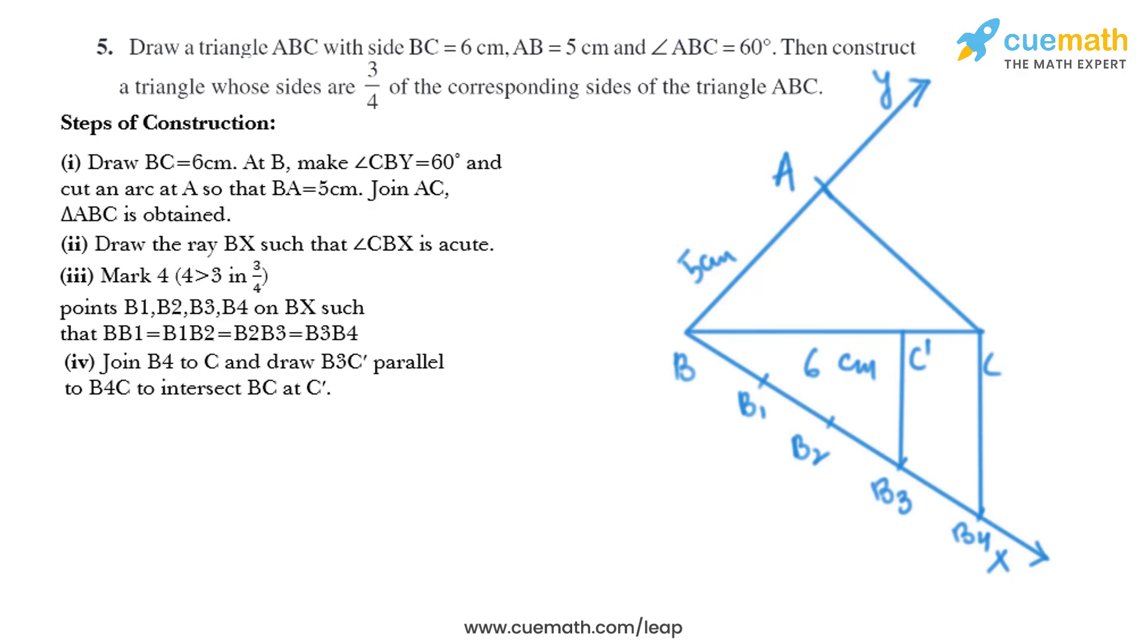Now in the next step, draw C'A' parallel to CA to intersect BA at A'. So we'll draw a line like that and this C'A' is parallel to CA.